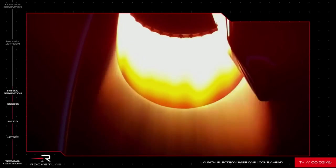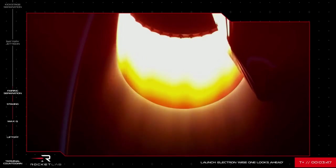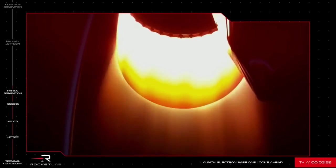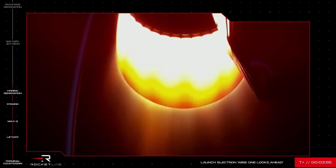If you're just joining us, we've had a successful start to Electron's 28th flight. The vehicle cleared Pad A at Launch Complex 1 at 0630 UTC and has successfully passed through its initial key milestones on its way to payload deployment. The second stage is now ignited and carrying the kick stage with the payload attached the rest of the way into space.